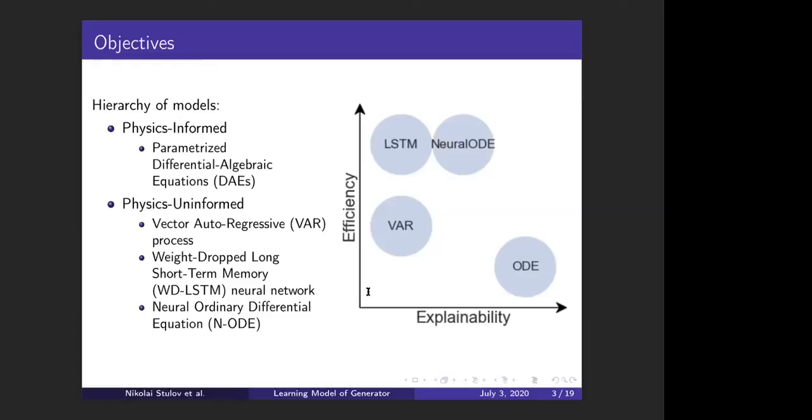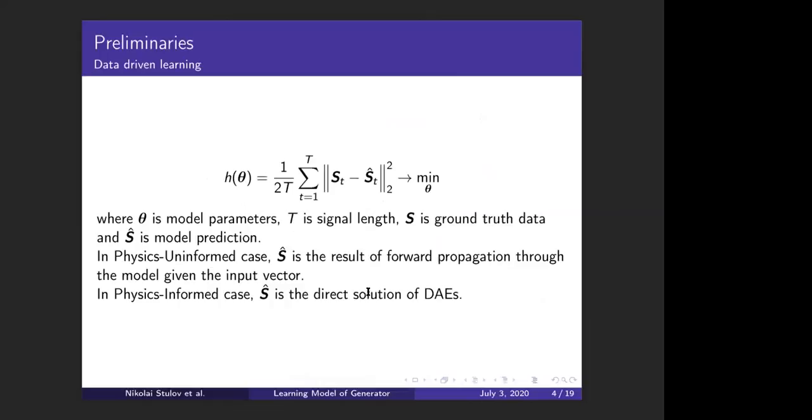We optimize parameters of our models by minimizing the mean squared error loss function. We solve this optimization problem using gradient-based method Adam. On the slide you can see the formula for mean squared error, and two values enter this formula: S and S-hat. S is the ground truth and S-hat is the model prediction. The meaning of S-hat is different in physics informed and uninformed cases. In the physics uninformed case, it's just the result of forward propagation of any model, so it can be regression or a neural network. In the physics informed case, it's a direct solution of the DAEs.